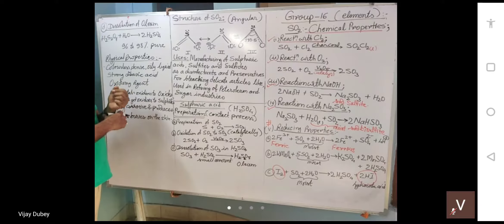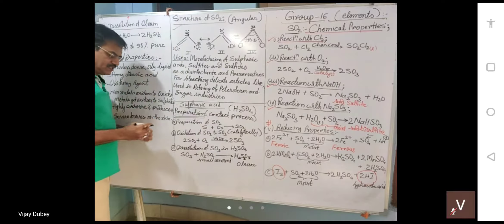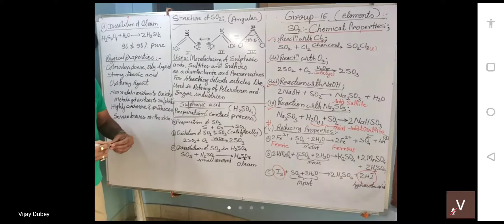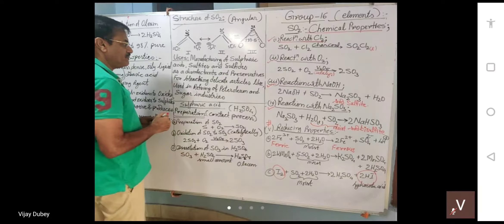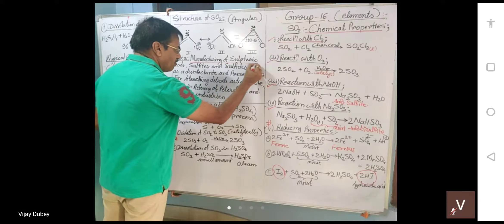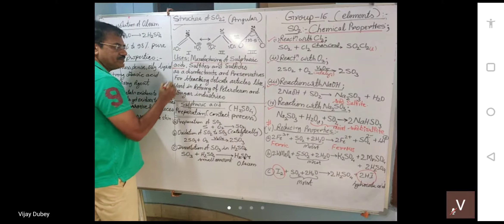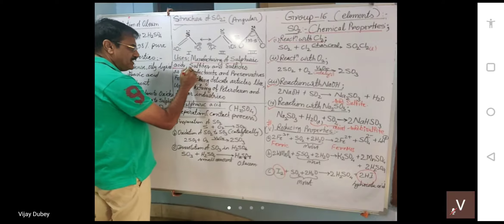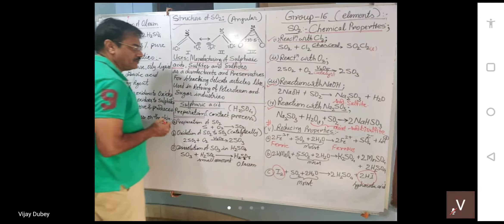This is about the structure of SO2. Now, the uses of sulfur dioxide: it is used in the manufacturing of sulfuric acid, various sulfites and sulfides. It is used as a disinfectant and preservative, including as a food preservative.